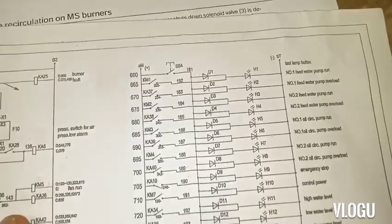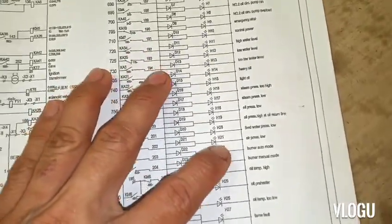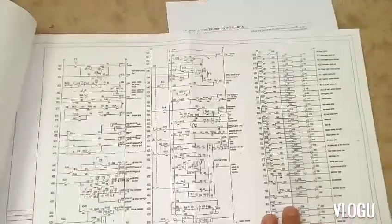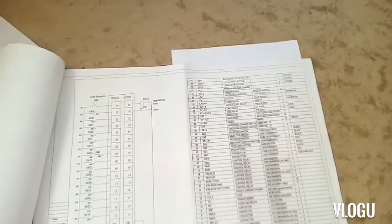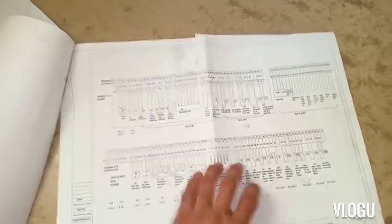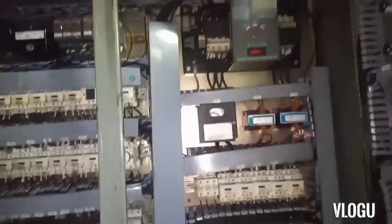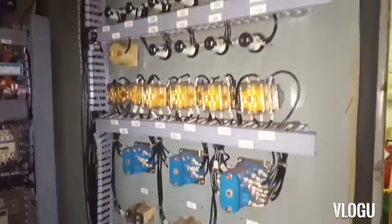The problem is we cannot run in auto and we cannot run in manual mode, and there's no alarm showing. After reading and downloading the manual for this burner controller, all you need to do is push the glass to reset the burner controller, and after that you can run the boiler automatically.